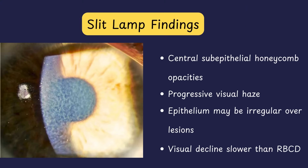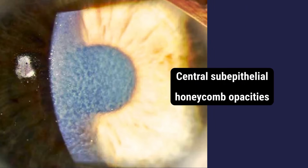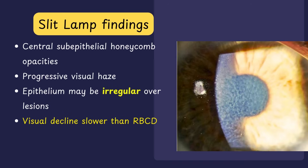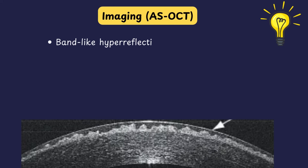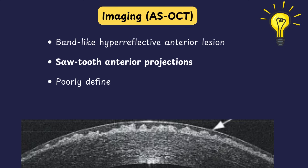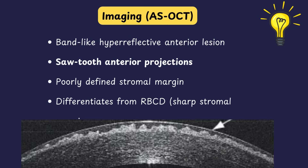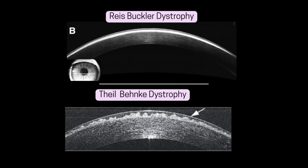On slit lamp examination, the hallmark of TBCD is central honeycomb-shaped sub-epithelial opacities. These opacities tend to merge over time, and because the basement membrane is replaced by abnormal material, the overlying epithelium looks irregular. Compared to RBCD, the visual decline in TBCD is usually slower and recurrence of corneal erosions is also less frequent. On anterior segment OCT, a band-like hyper-reflective lesion is found at the Bowman's layer, but unlike RBCD, this band has sawtooth anterior projections into the epithelium and the stromal interface is poorly defined.